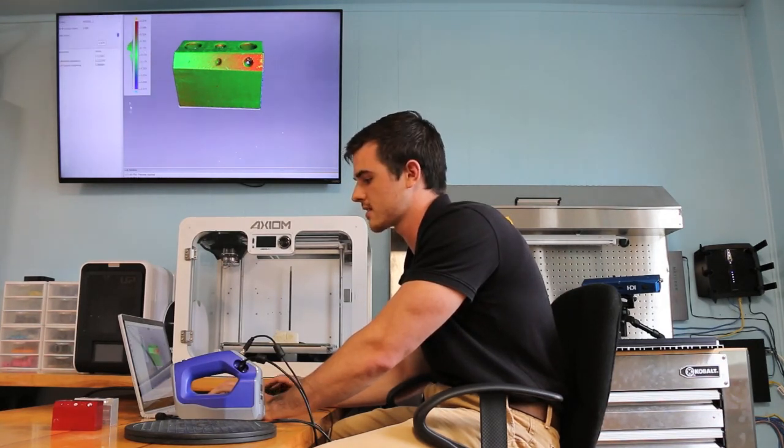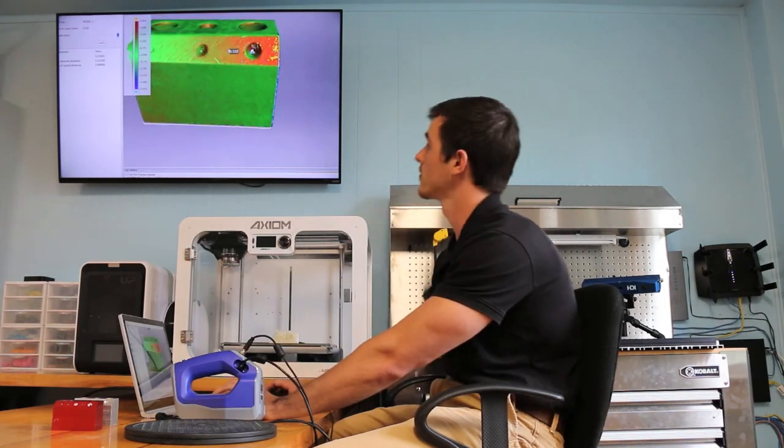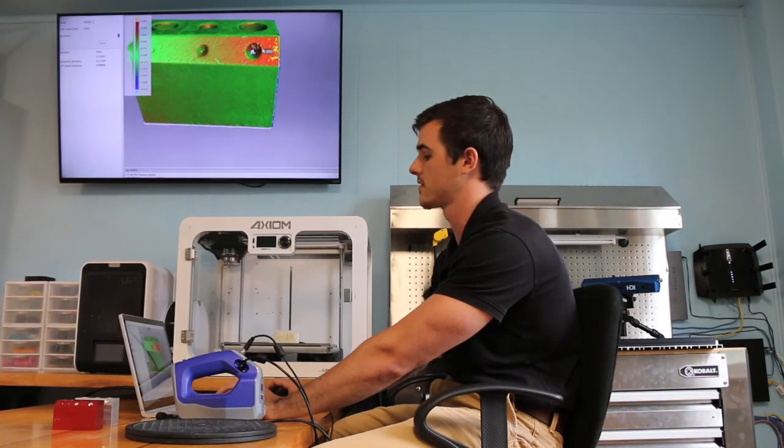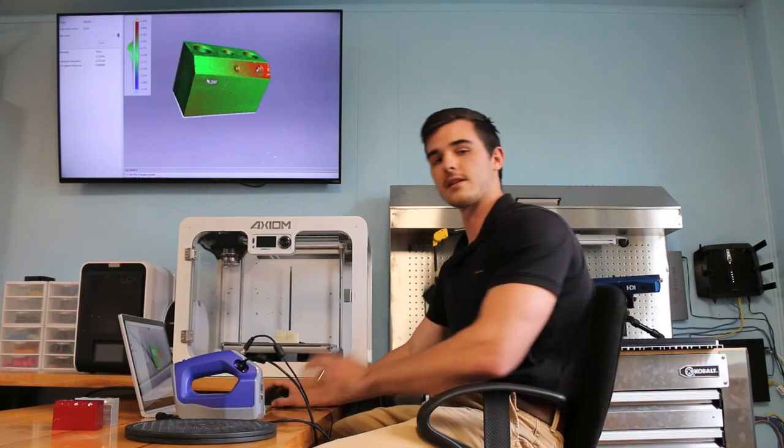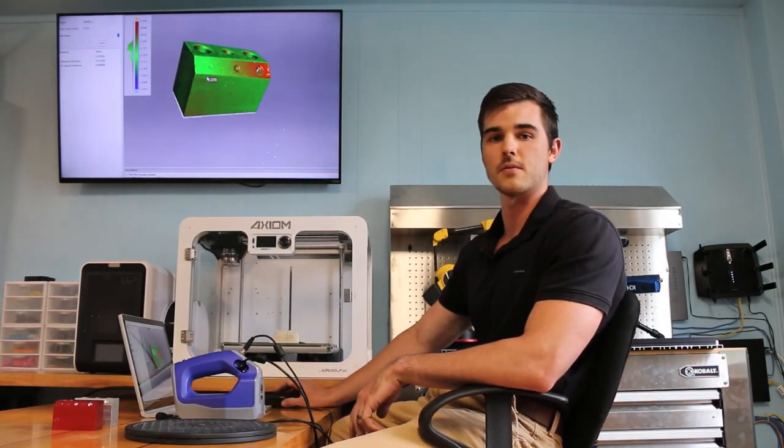But if I want to understand this a little bit more, I can simply bring my cursor over into these particular areas and find out exactly where these differences are. So there you go. That's how to compare two different models inside of Artec Studio. Thanks for watching.